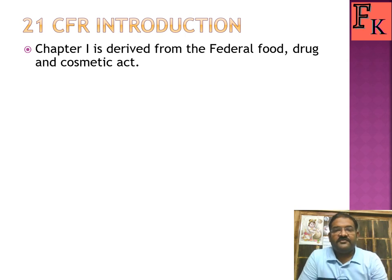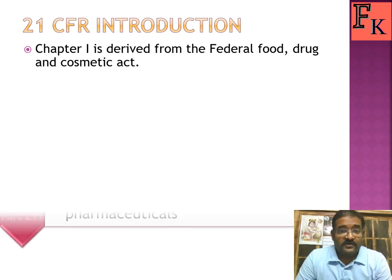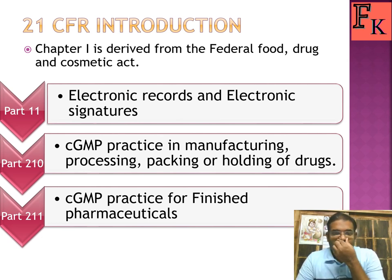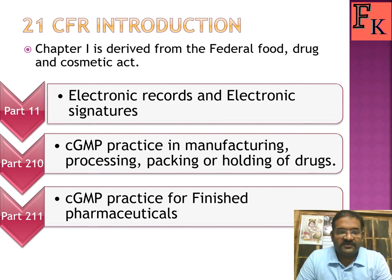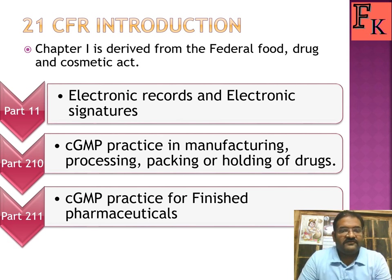Chapter 1 is derived from the Federal Food, Drug, and Cosmetic Act — similar to India's Food and Drug and Cosmetic Act. The three main parts of 21 CFR relevant to pharma are: Part 11 (Electronic Records and Electronic Signatures), Part 210 (cGMP for manufacturing, processing, packing, or holding of drugs), and Part 211 (cGMP for finished pharmaceuticals). There are also Part 314 for FDA approval to market a new drug and Part 600 for biological products, but our main focus is on Parts 11, 210, and 211.